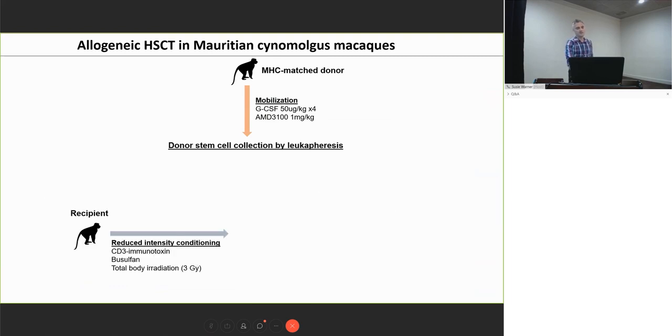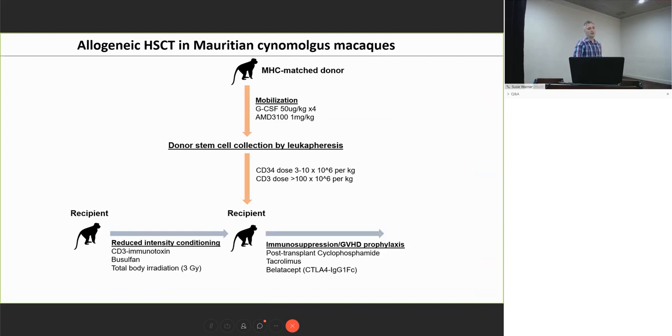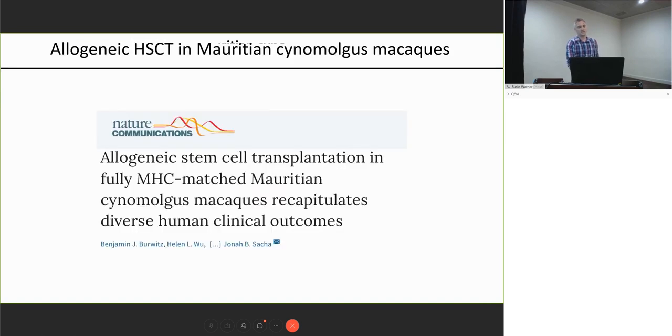The recipients then undergo reduced intensity conditioning. This, again, mimics what happens at the OHSU hospital. The recipient receives doses of stem cells and CD3 T cells. It is on par with what they get in the clinic. And they undergo a short immunosuppressive GVHD prophylaxis regimen. And it turns out this is actually really a good model. It recapitulates many of the facets that you see in humans in the clinic undergoing allogeneic stem cell transplantation.